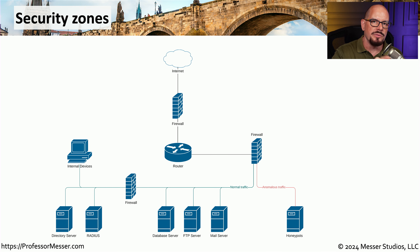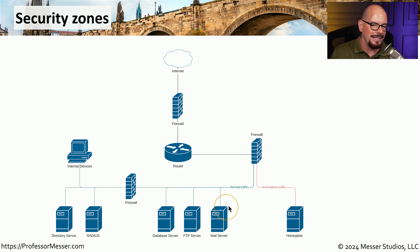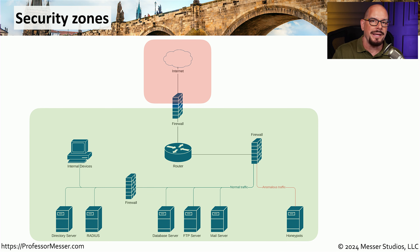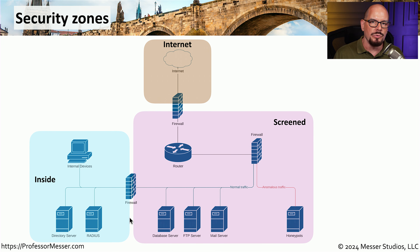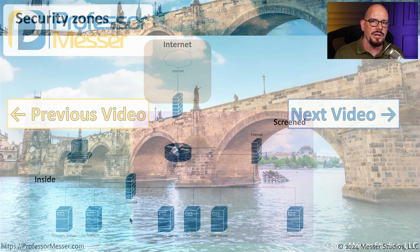Visually, we can overlay security zones onto our existing network design. We have an internet connection coming into a firewall, then a router with another firewall that sends some traffic to honeypots and the rest inside to our normal network. We can define one security zone where the internet connects to our firewall as the untrusted zone, and everything else as the trusted zone. For more granularity, you could break this into further zones — an internet zone, a screened subnet zone, and an internal network separated by a separate firewall — adding more security zones to your zone-based firewall.